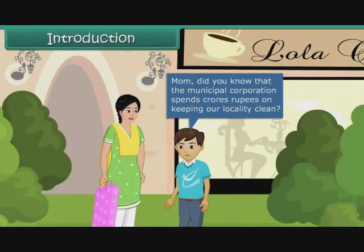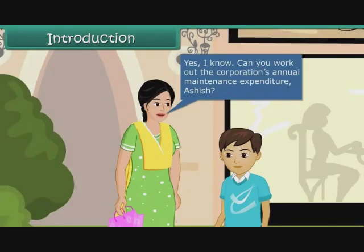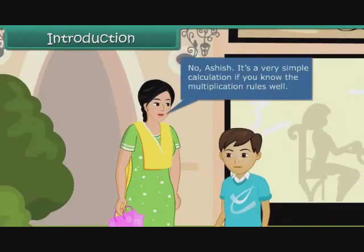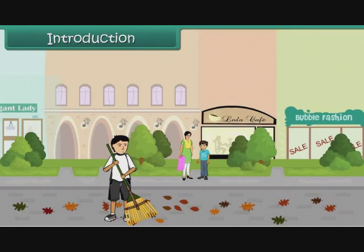Mom, did you know that the Municipal Corporation spends crore rupees on keeping our locality clean? Yes, I know. Can you work out the Corporation's annual maintenance expenditure, Ashish? It is a long calculation, Mom. No, Ashish. It is a very simple calculation if you know the multiplication rules well. In this lesson, you will learn to perform basic operations on large numbers.